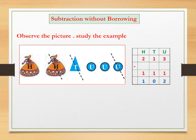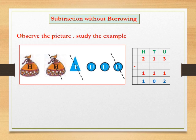Then we see 1 purse of 100, 1 ten and 1 unit taken away from these. So we subtract 100, 1 ten and 1 unit from 200, 1 ten and 3 units. We write the numbers in columns. When we subtract, first subtract the units from the units, then subtract the tens from the tens, and last the hundreds from the hundreds.